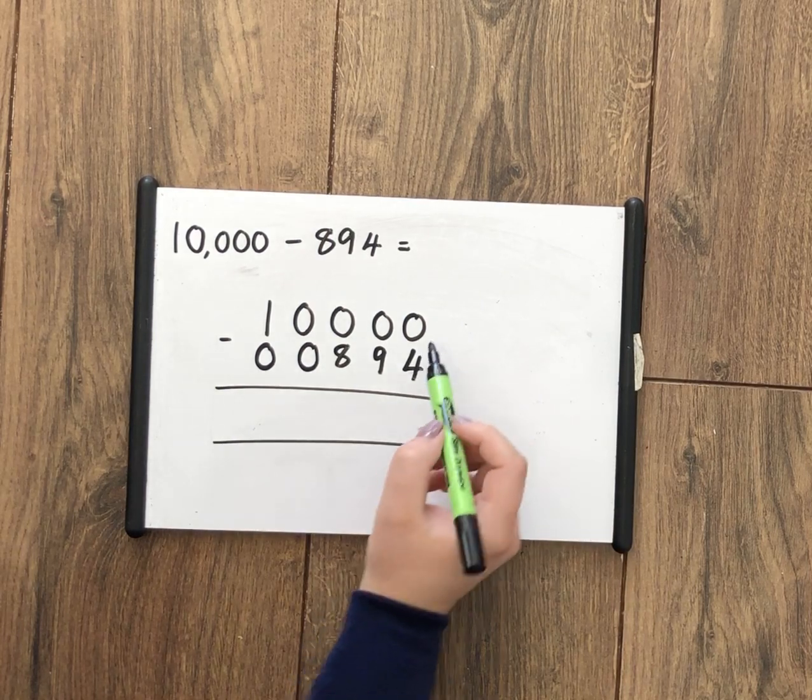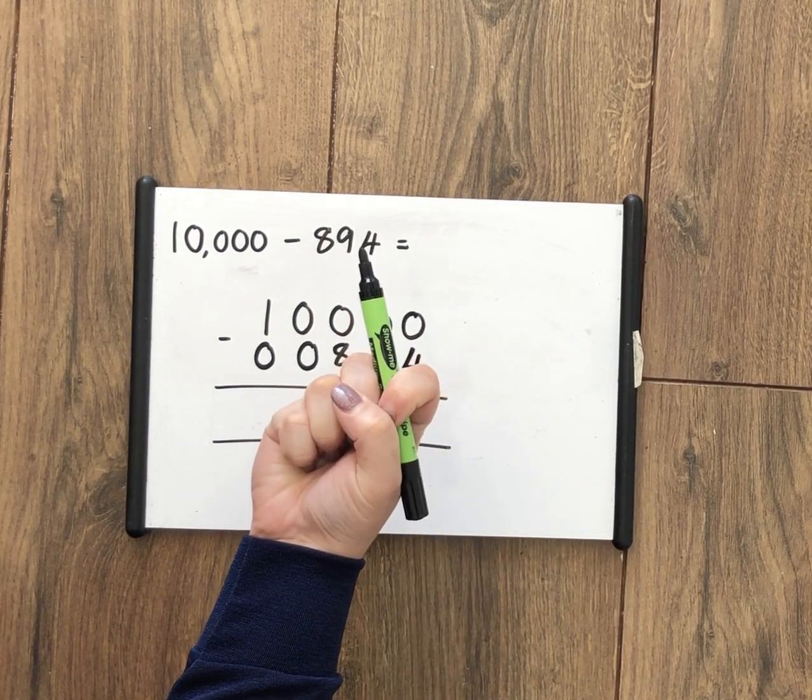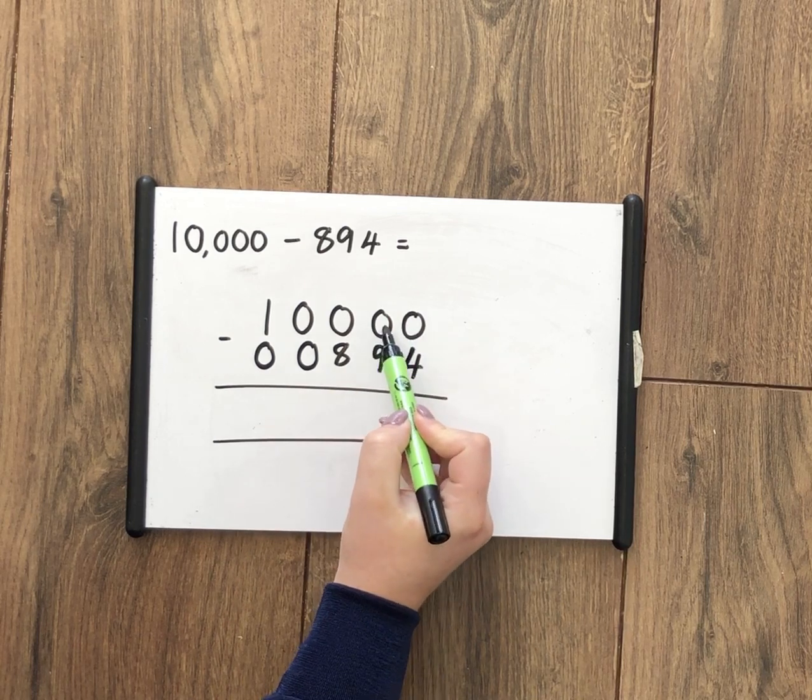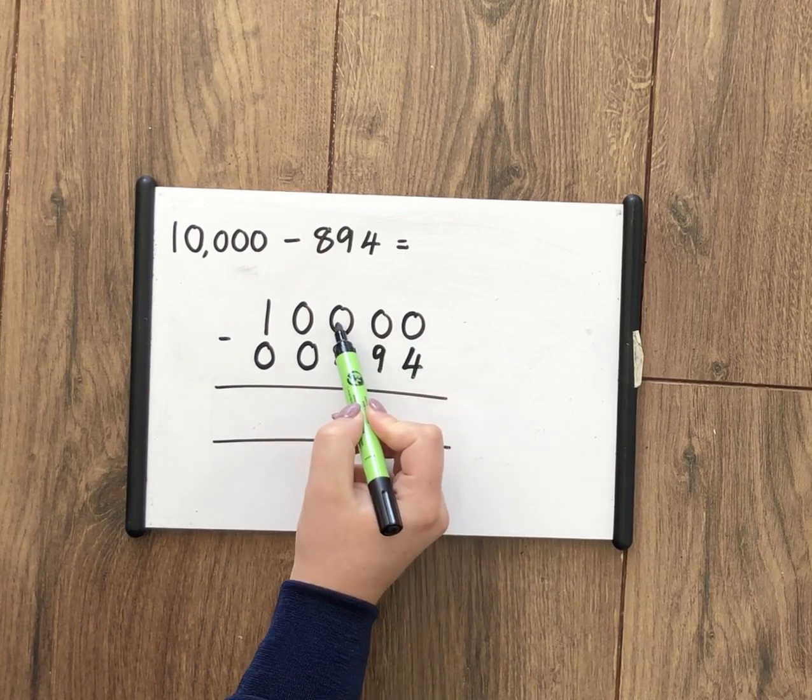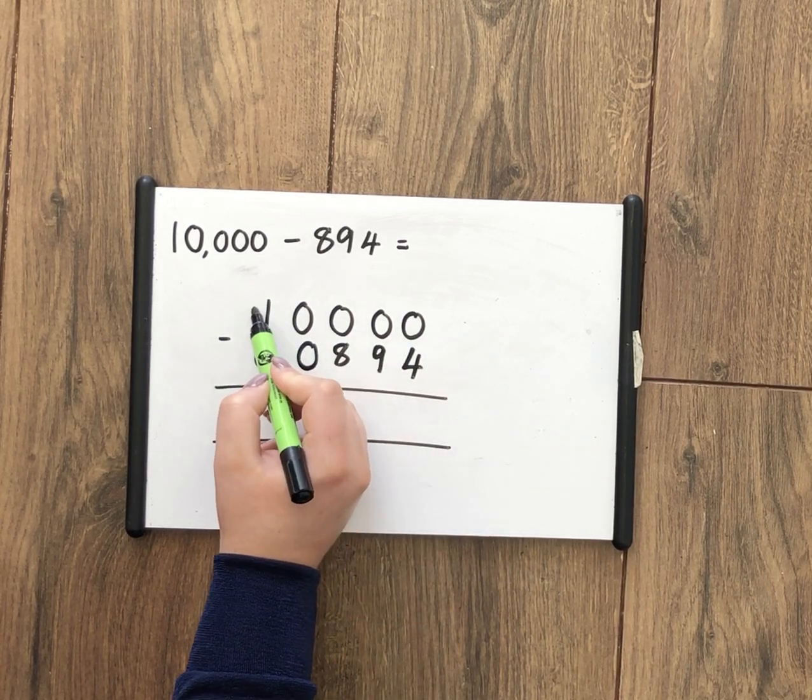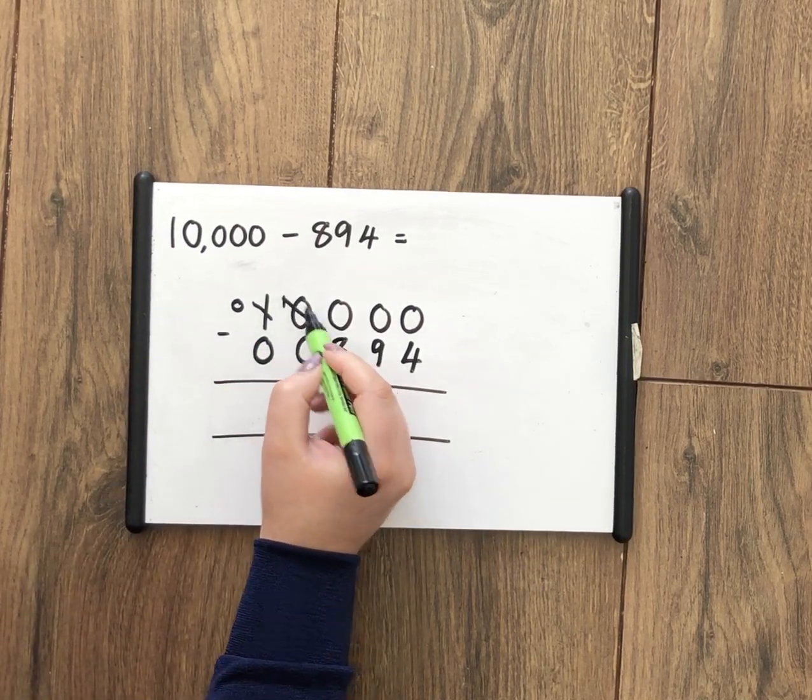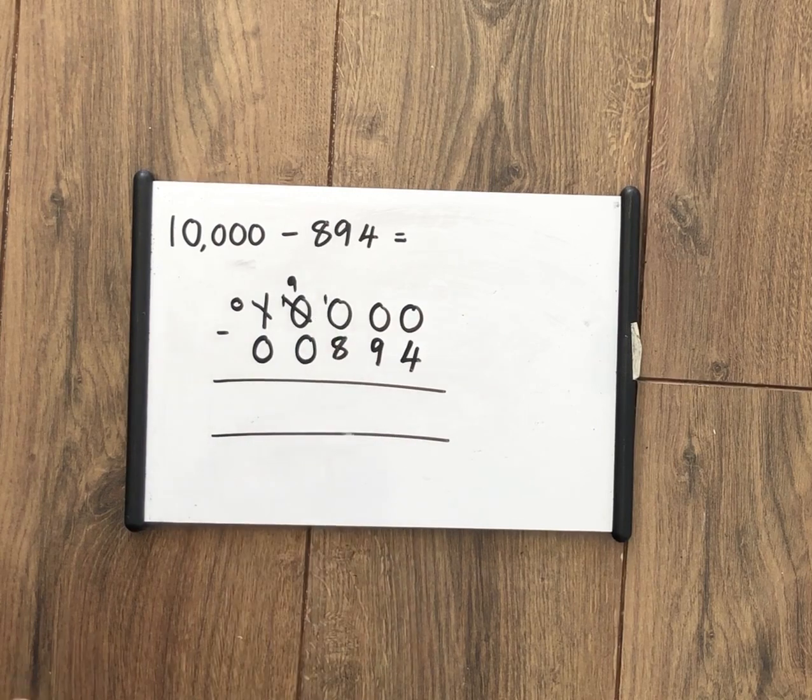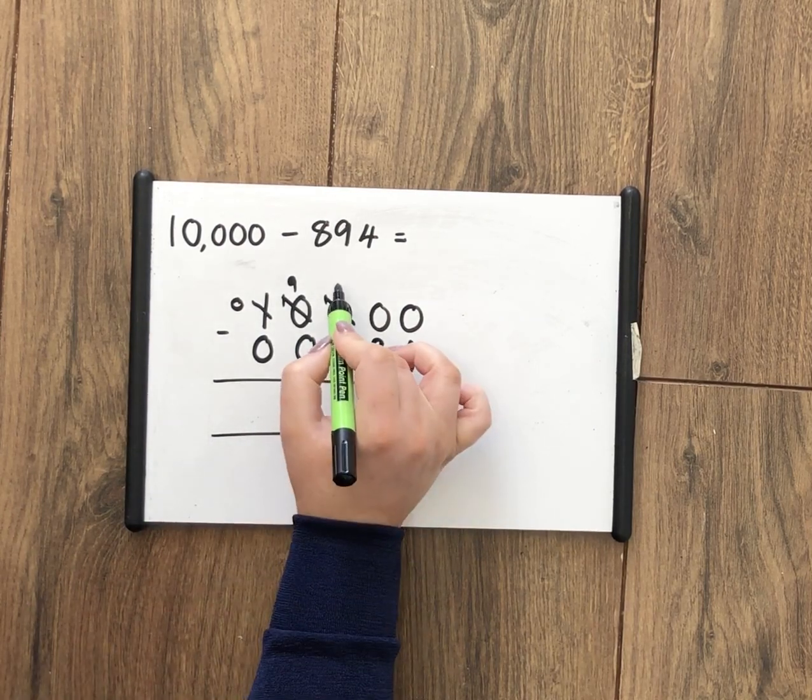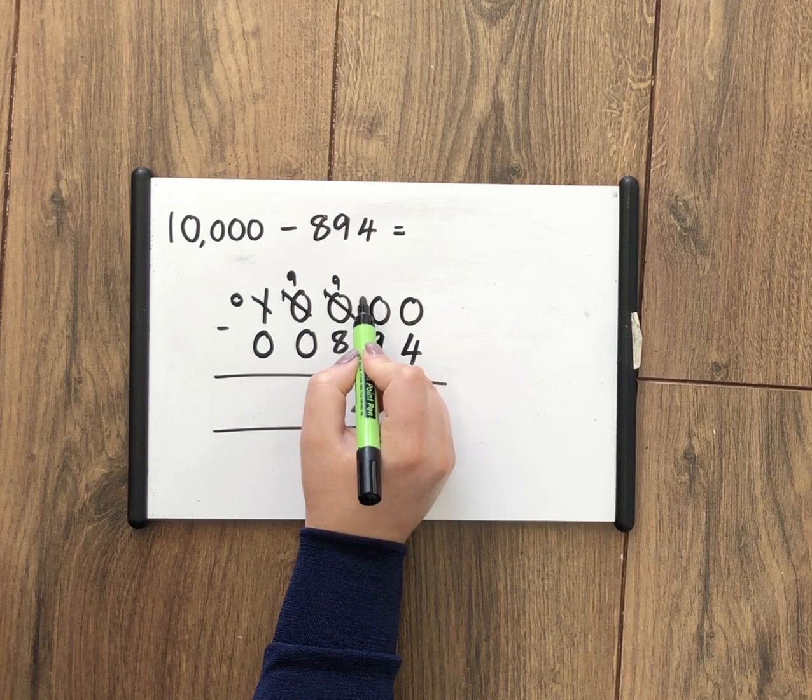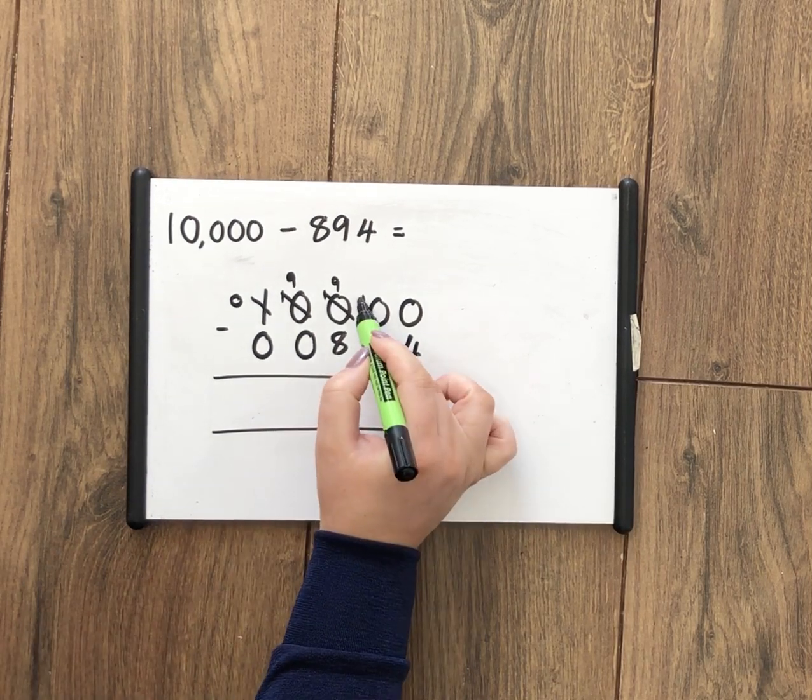So 0 take away 4. I have nothing and I want to take away 4. I can't do it. Have to borrow from my friend. Can't borrow from there, or there, or there, but I can from here. So that one becomes a 0, that becomes a 10. Cross that out, make that a 9, make that a 10. Cross that one out, make that a 9, make this one a 10. Cross that one out, make that 9, make that a 10.